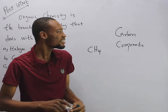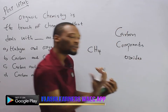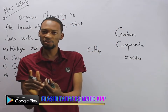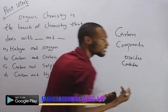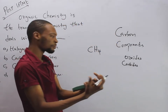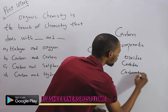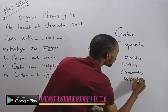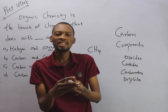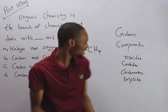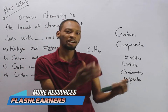However, there are exceptions. If the compound of carbon is an oxide — say, carbon oxide — then it is not organic chemistry. If the compound is a carbide, then it is not organic chemistry. If the compound is a carbonate or a sulfide, it is also not organic chemistry. So organic chemistry is the study of carbon and its compounds, except oxides, carbides, carbonates, and sulfides of carbon.